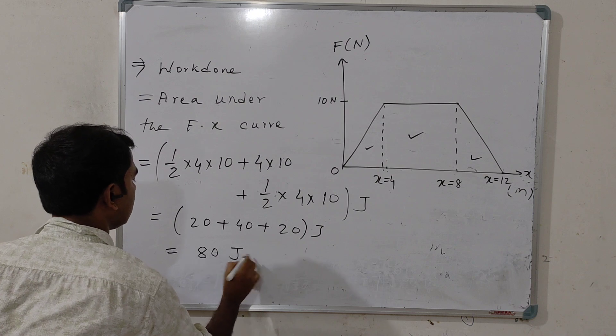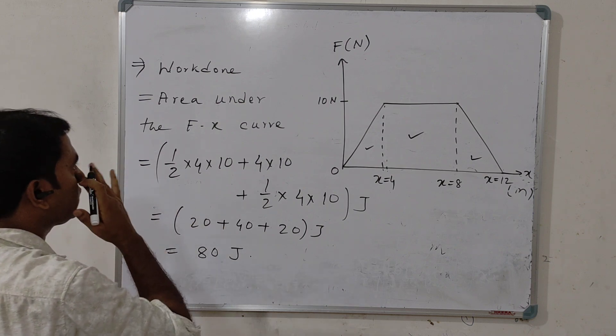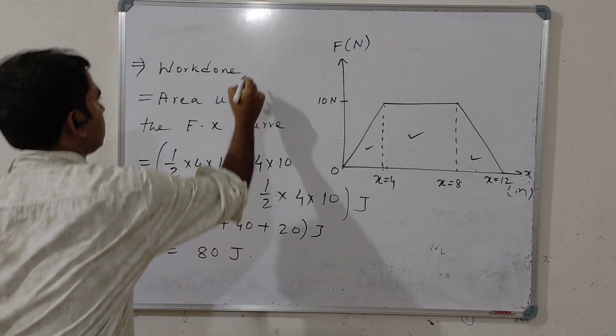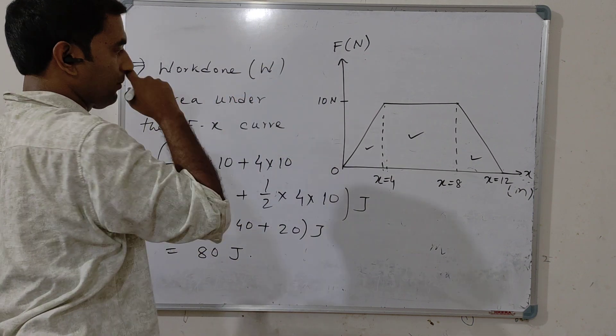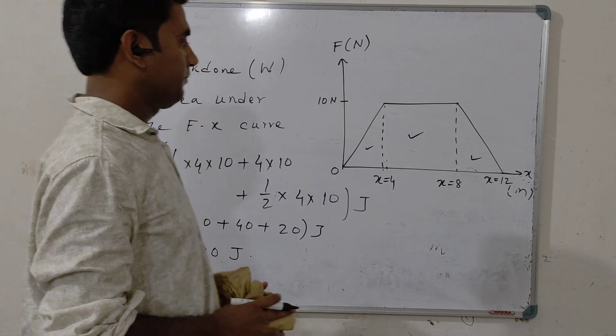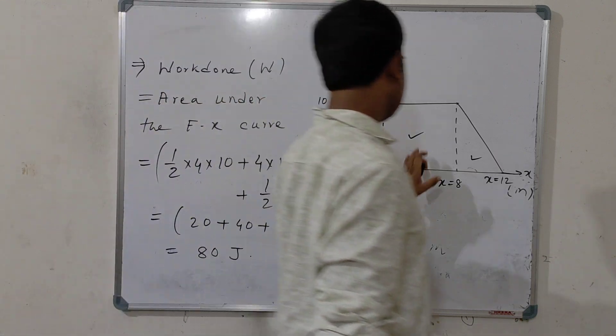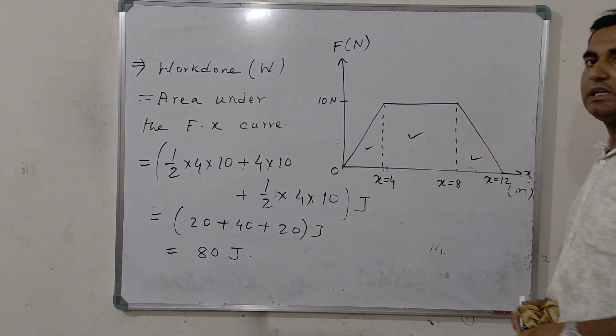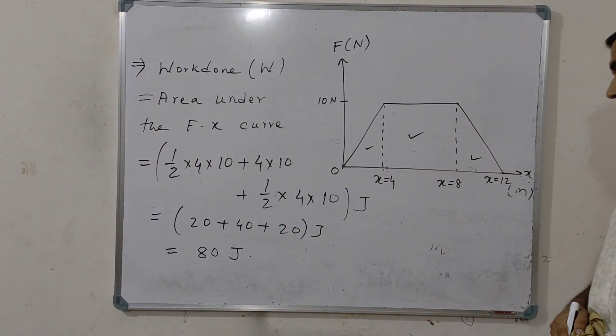So, the total work done from x equal to 0 to x equal to 12 meter becomes: 20 plus 40 plus 20, which equals 80 Joule. We have found out the amount of work done W from this curve, which is actually 80 Joule.